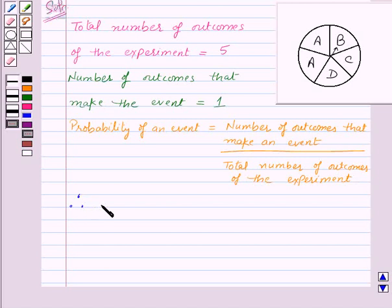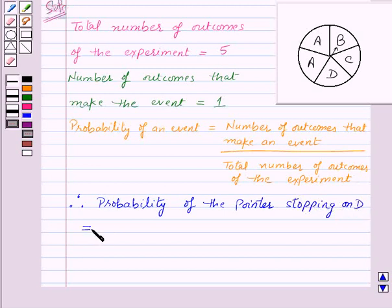Therefore, probability of the pointer stopping on D is equal to number of outcomes that make an event that is 1 upon total number of outcomes of the experiment that is 5. So 1 upon 5 is the required probability and this is our answer.